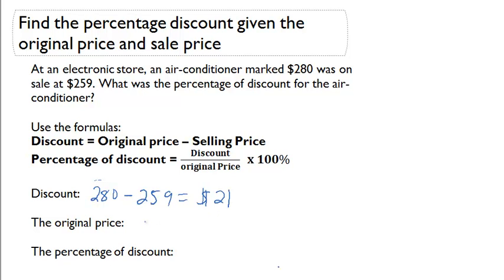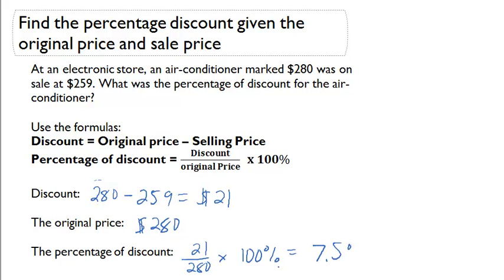The original price was $280, so now I can figure out the percentage of discount. It's going to be $21 divided by $280, times 100% to convert into a percentage, and that will give me 7.5%. So the percentage discount for this particular item was 7.5%.